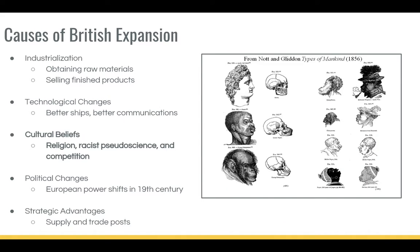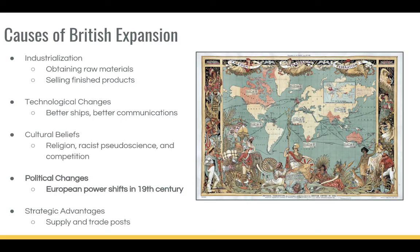In our last video we looked at cultural beliefs, religious beliefs, and racist pseudoscience — competition between countries as they fought to show that their culture was superior. All these things also led to British expansion. In the 19th century there were also a lot of political changes. European power shifts in the 19th century, all the way back to the time of Napoleon, allowed Britain to expand their empire.